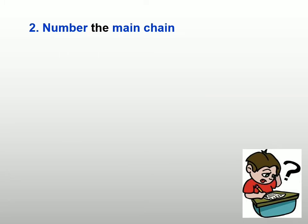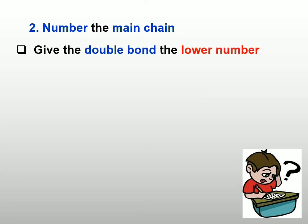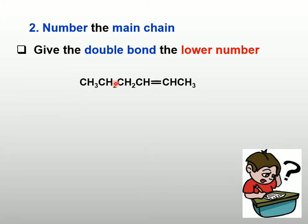The second step, we need to give numbering to the parent chain. Always give the double bond the lower number. For example, with this compound, if you start from one side, the double bond is at carbon 1 and 2. If you start from the right, the double bond is at carbon 2 and 3. So the numbering will start from the right, which gives the double bond the lower number.